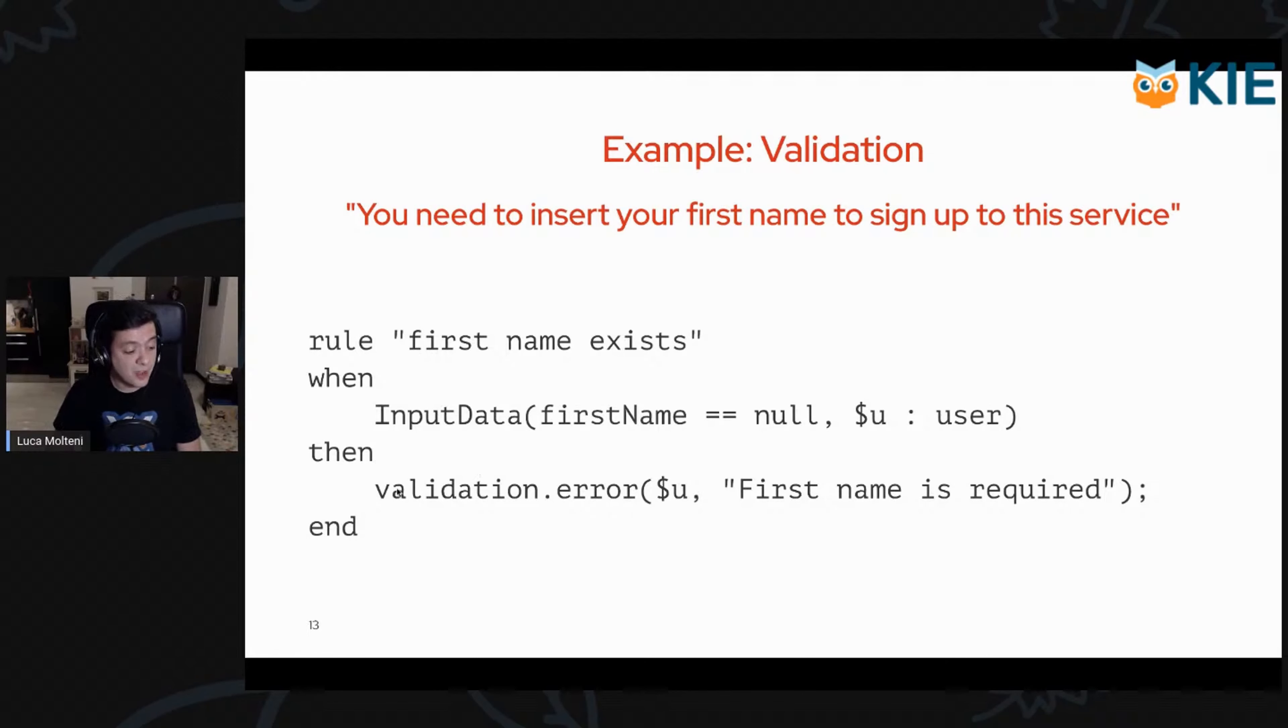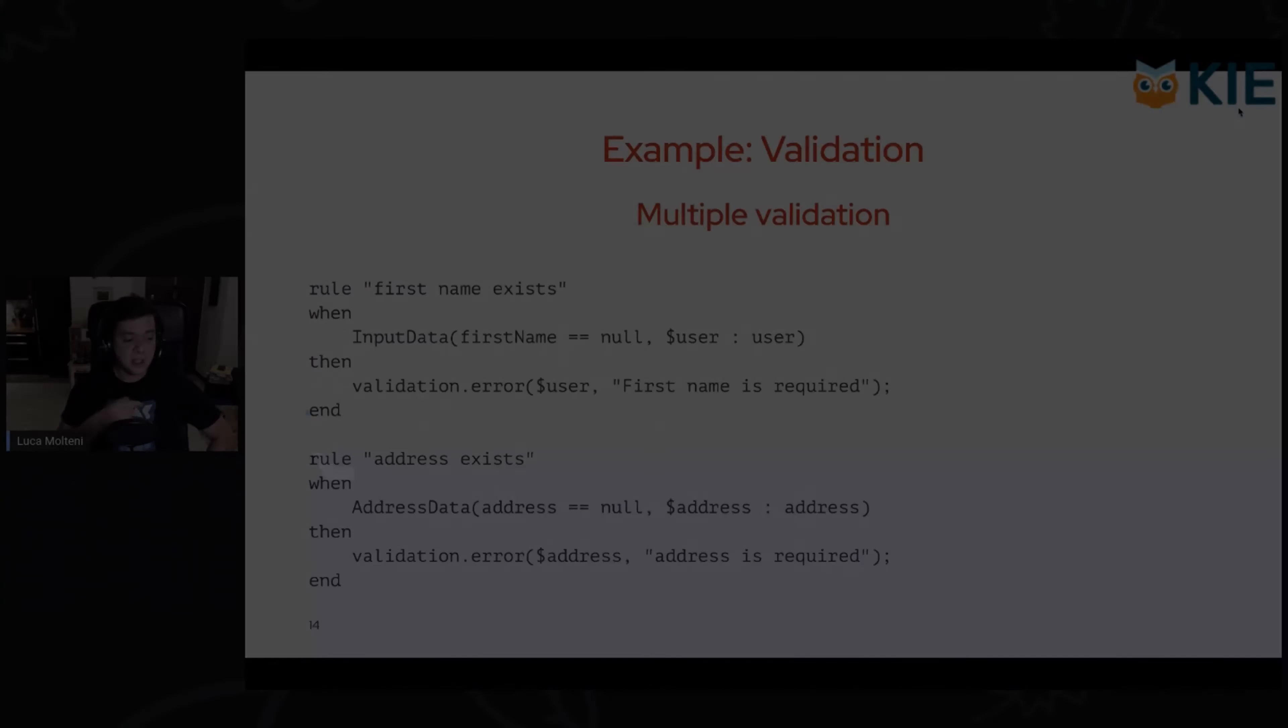When the rule fires, we'll call this validation, which is probably something defined elsewhere, maybe a global variable or something like that. We call the error method in a similar fashion to what we did before.